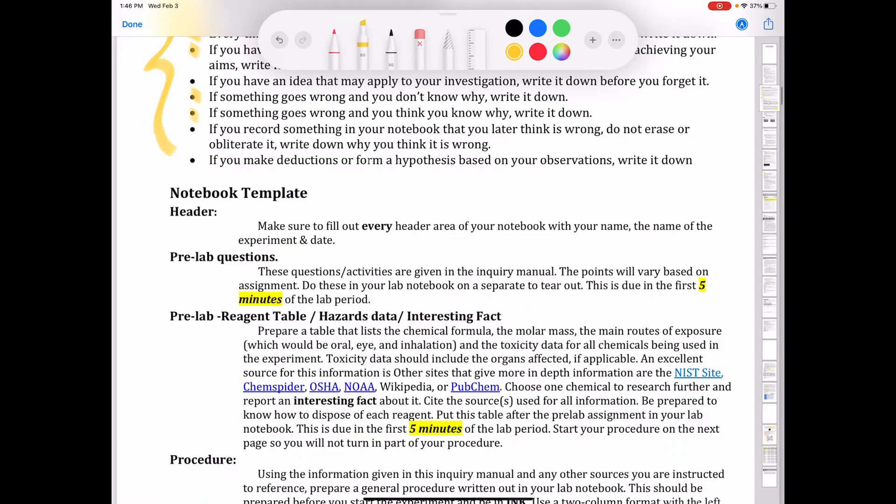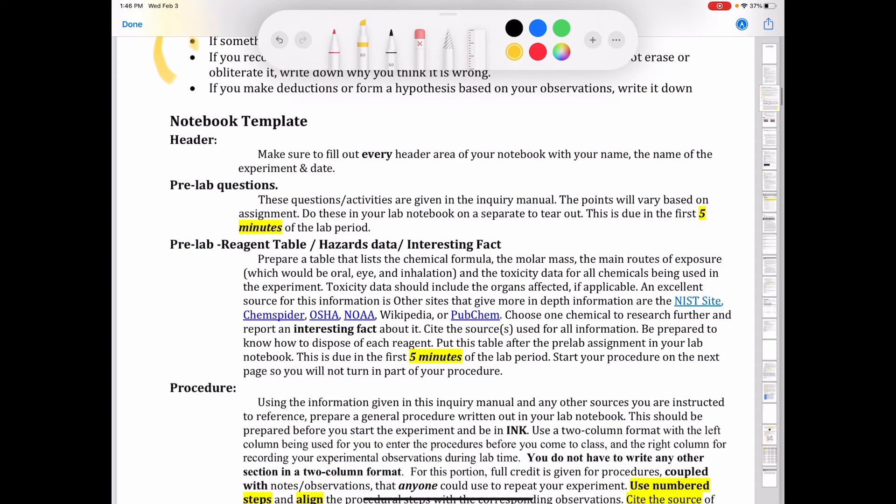Now, as far as the template goes, the first thing you're going to need is to have a header. A header is at the top of your lab notebook pages, and that is where you fill in the title of the experiment, your name, the date, the class section, and you have to fill that out on the top of every page.